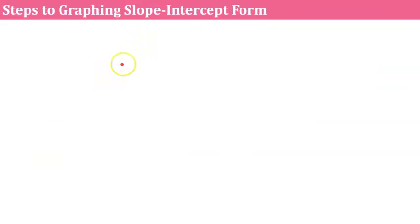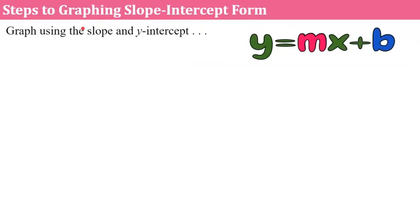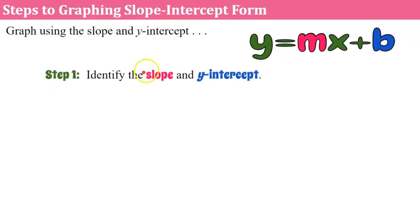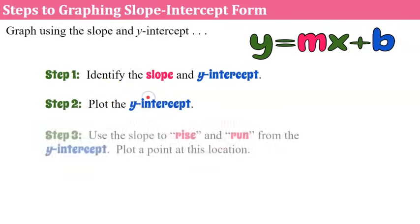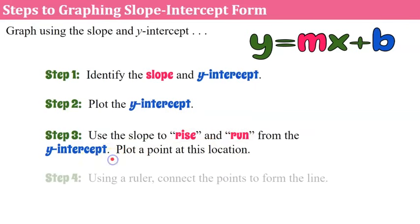Now we can also use slope-intercept form to graph a line. Here are the simple steps to graphing an equation written in slope-intercept form. Step 1: identify the slope and the y-intercept. Step 2: plot the y-intercept. Step 3: use the slope to rise and run from the y-intercept and plot a point at that location. Step 4: using a ruler, connect the points to form the line.